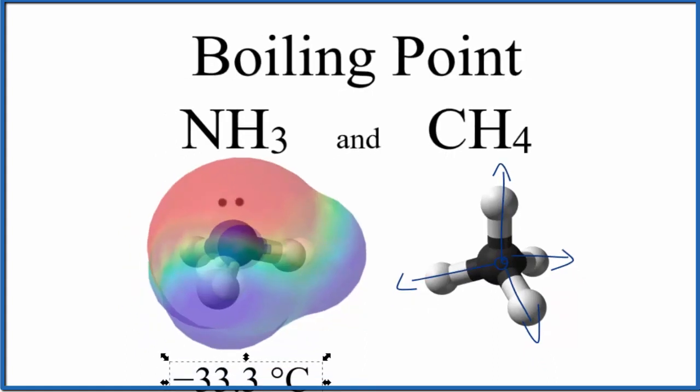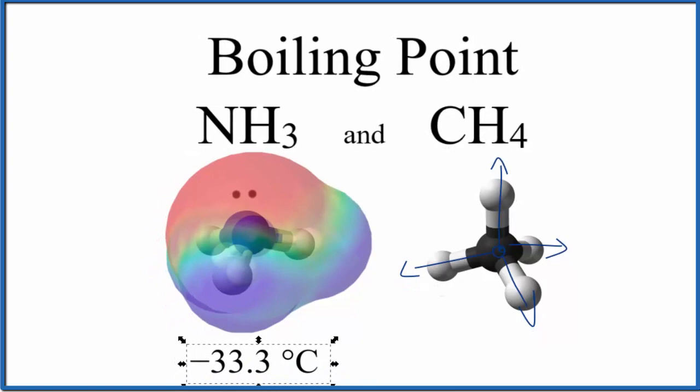The boiling point for ammonia, negative 33.3 degrees Celsius. The boiling point for methane, that's negative 161.6 degrees Celsius. This is a much, much lower number. So methane has a much lower boiling point than ammonia.